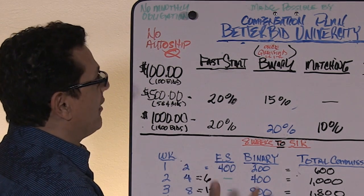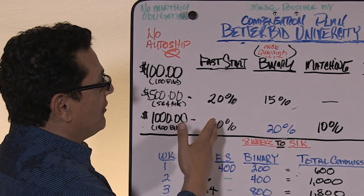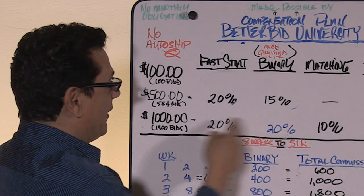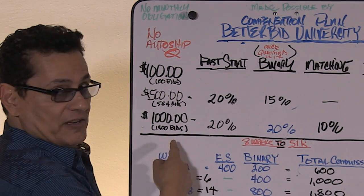So, with that said, no monthly obligation. One on your left, one on your right, and you're qualified for 20% at the director position.